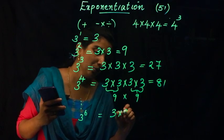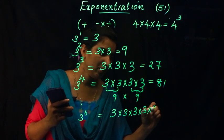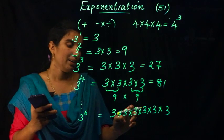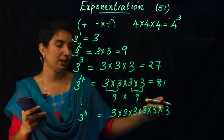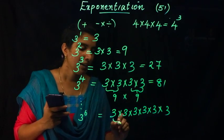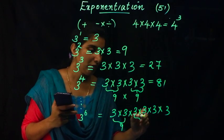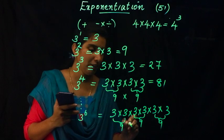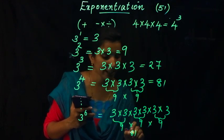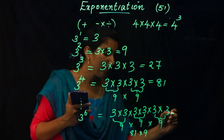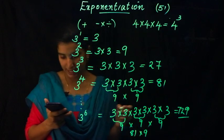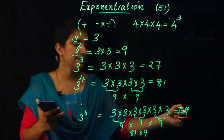3 raised to 6: we multiply 3 nine times — 3 × 3 = 9, 9 × 3 = 27, then continuing: 9 × 9 = 81, and 81 × 9 = 729. So 3 raised to 6 equals 729.